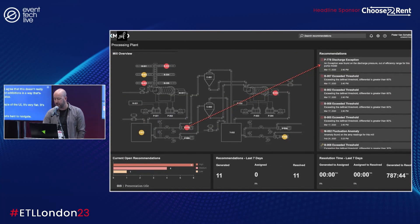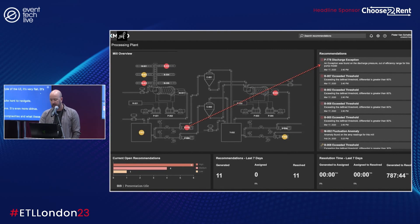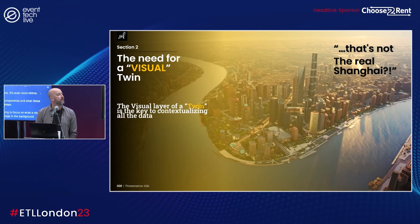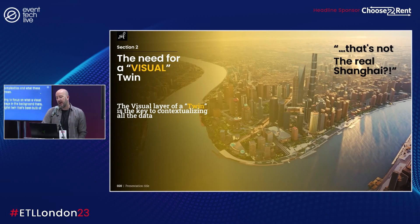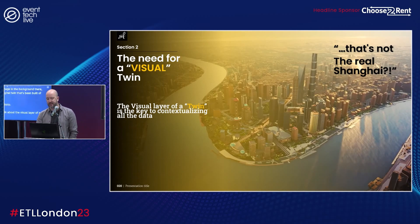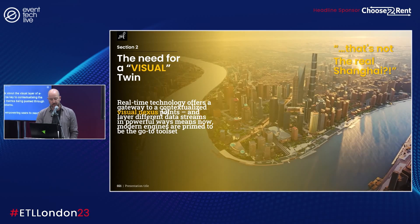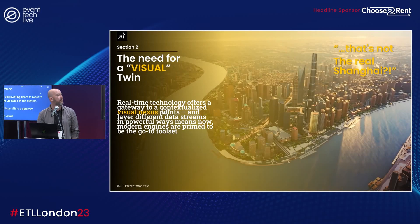Here's another one — even more obtuse in terms of complexity. So now I'm going to focus on what a visual twin is. When we talk about the visual layer of a twin, this should be key to contextualizing the data and the key metrics being pushed through the system of systems, and give users the power to react to what's going on inside the system.